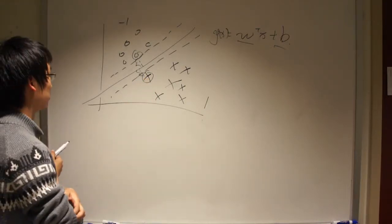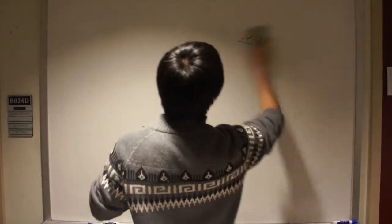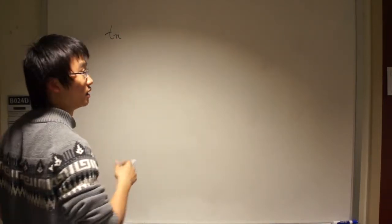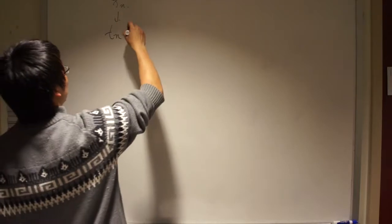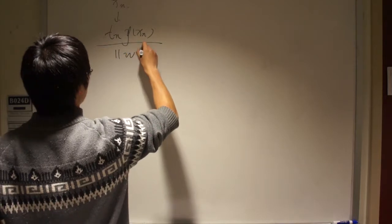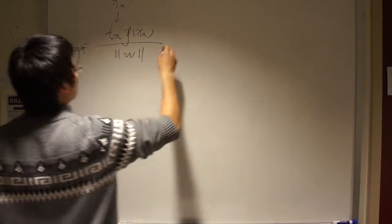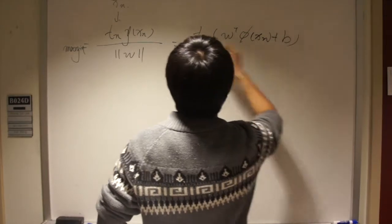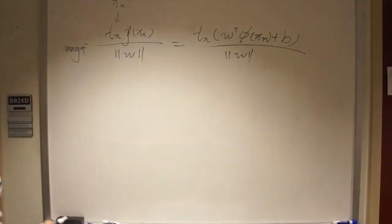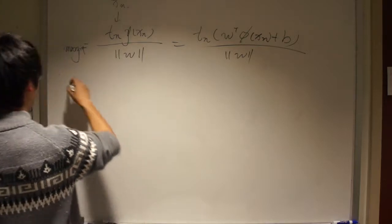We will talk about support vectors more later. We can write the margin in this form: T_n times Y(X_n) over the norm of W. This is the formula for the margin. So for SVM, what we want to do is maximize the margin, which is our objective function.